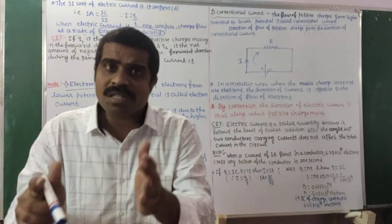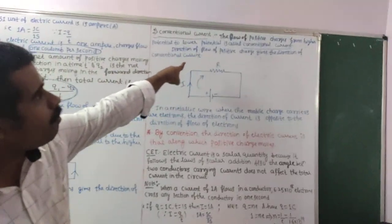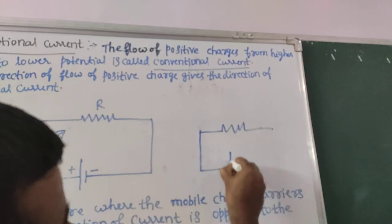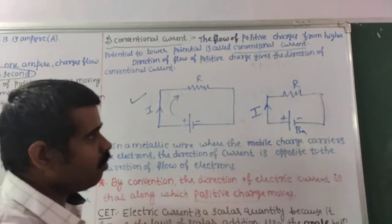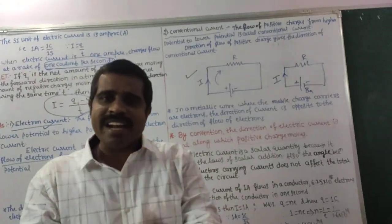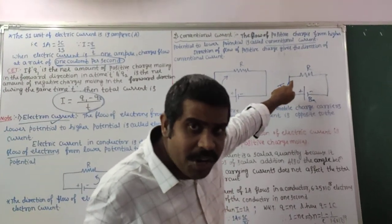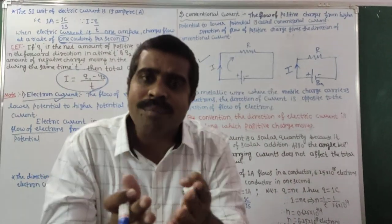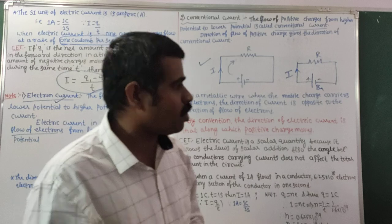All laws in current electricity are made for conventional current. When you say electric current in a circuit diagram and draw an arrow labeled I, you are indicating conventional current, which goes from higher potential to lower potential. In a metallic wire where the mobile charge carriers are electrons, the direction of current is opposite to the direction of flow of electrons.